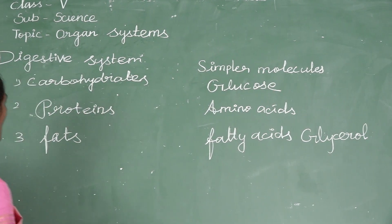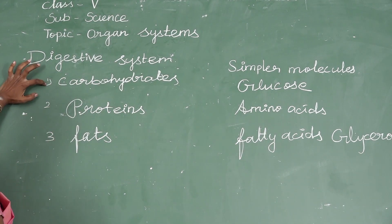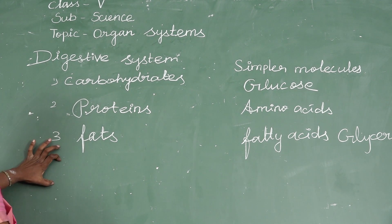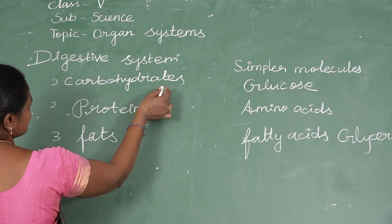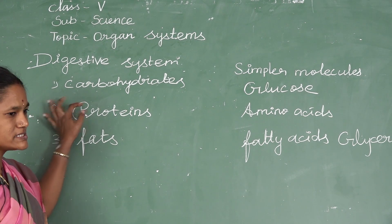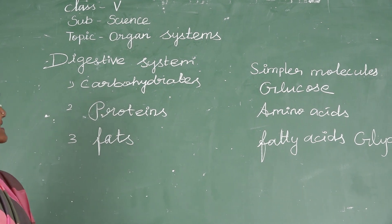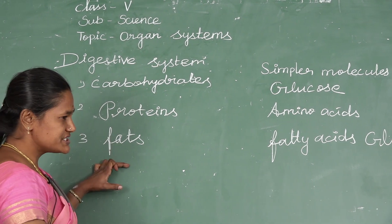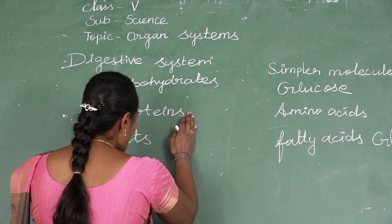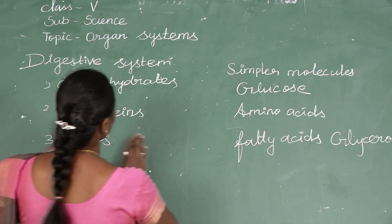Carbohydrates, protein, and fat are complex compounds — these are kinds of nutrition. Carbohydrates are found in rice, wheat, and potato. Protein is found in milk, egg, fish, and sprouted seeds. Fat is found in cheese, butter, and ghee. This conversion of complex compounds into simple molecules is called digestion.